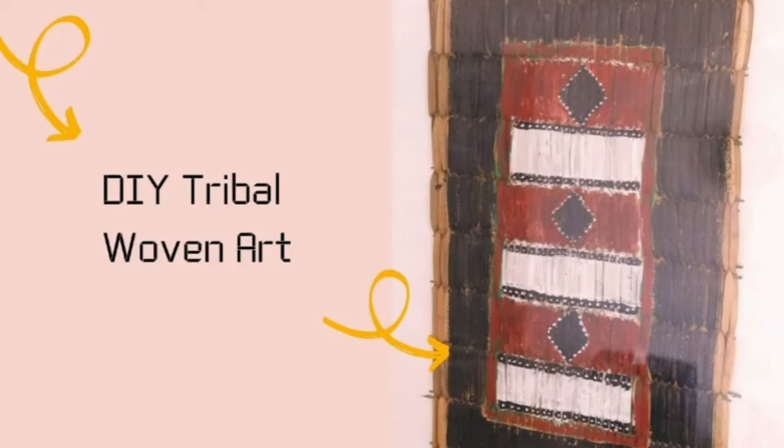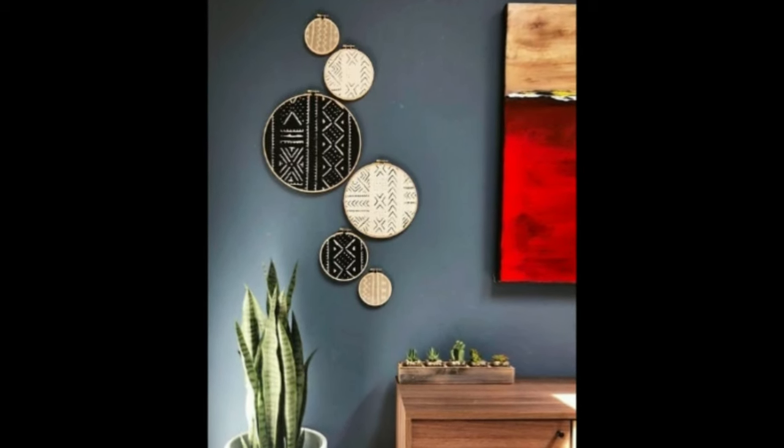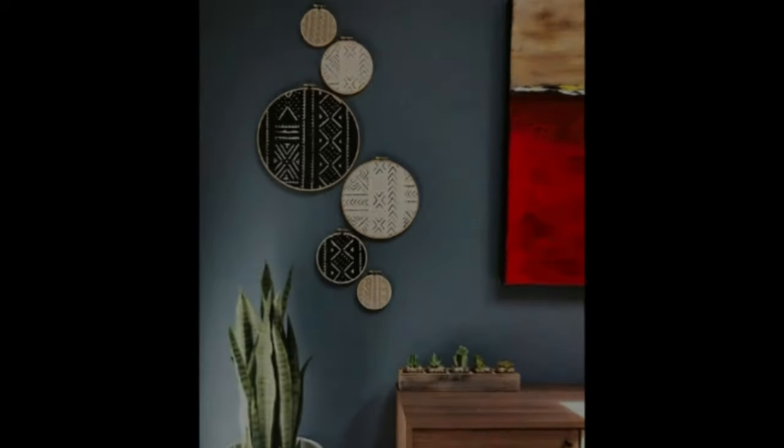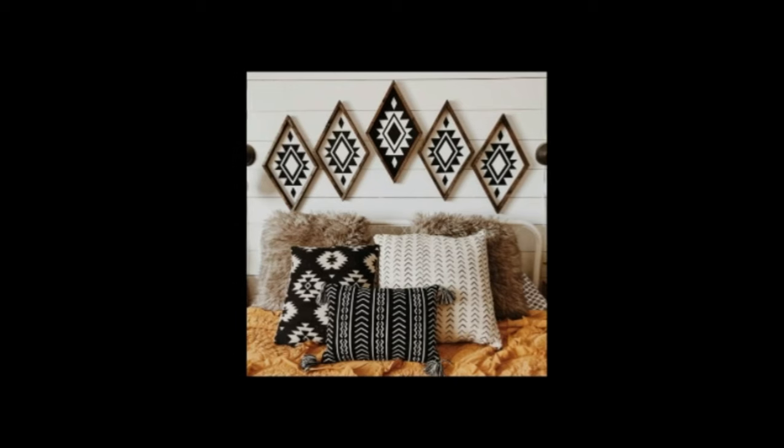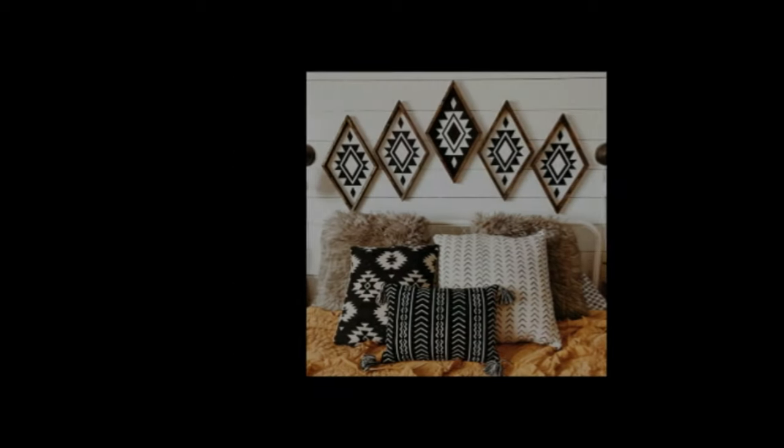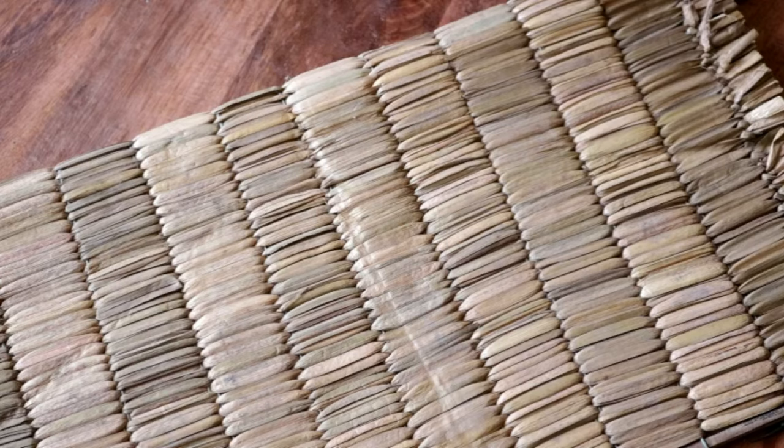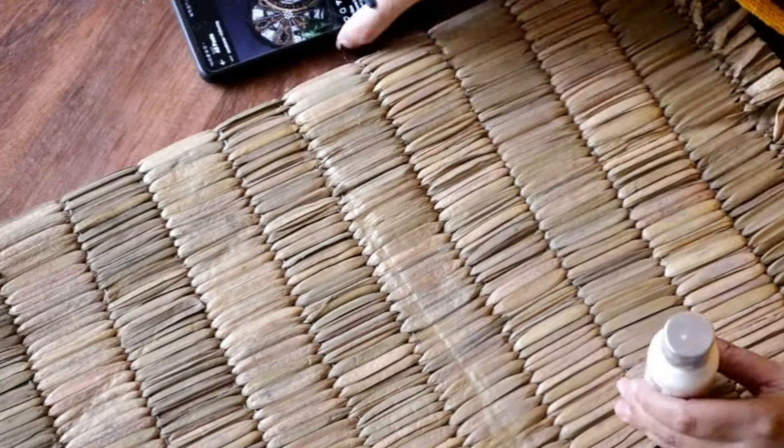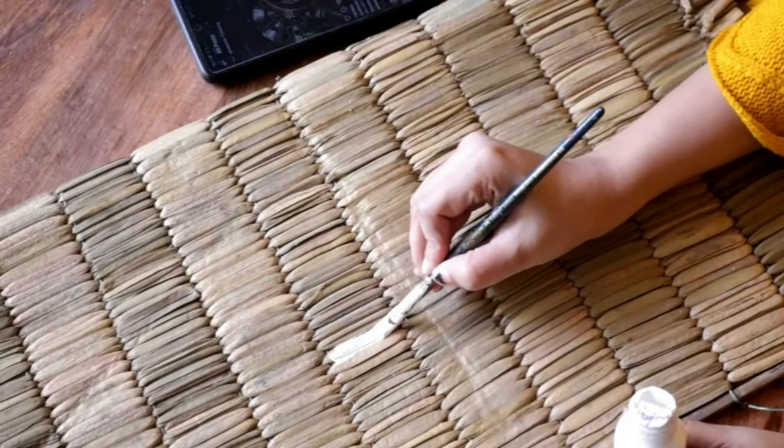Now we have reached the last DIY of this video, which is tribal art. Tribal art is very popular these days. I have seen them on baskets, on hoops, on wall frames. So I am going to do one using things which I have available with me. Basically, I am going to use a mat, a bamboo mat, which I got from my Assam trip recently. This is used as a floor mat there. I am going to cut it in two pieces because I want to make a small wall art. First, I am going to paint the mid section with some white acrylic paint or maybe chalk paint. It is up to you. You can use any paint.